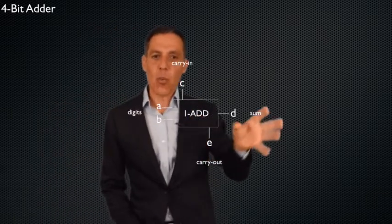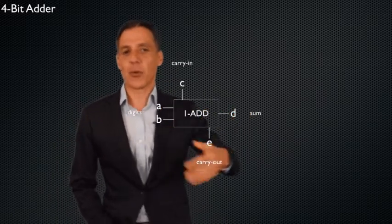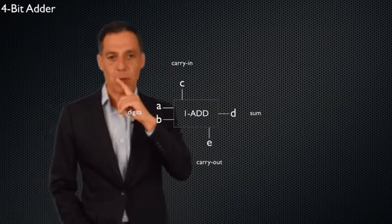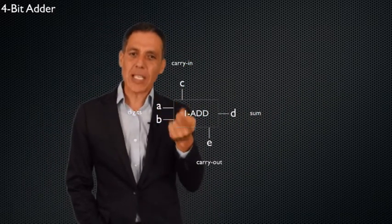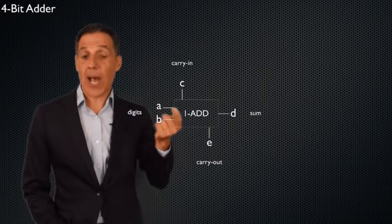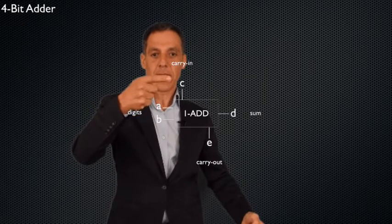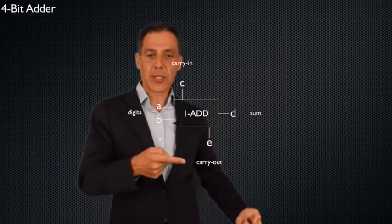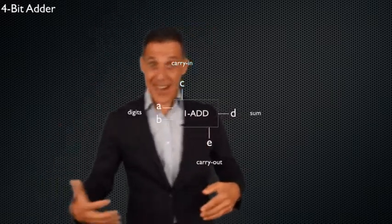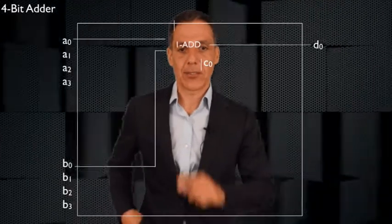Now we want to wire up a bunch of these to do 4-bit addition — and of course we could do 6, 8, etc. We'll stop at 4 since you'll get the point. You just have to think about how this works: take two inputs, carry in, shove the carry out to the next one as input to the next 1-bit adder, and keep repeating.